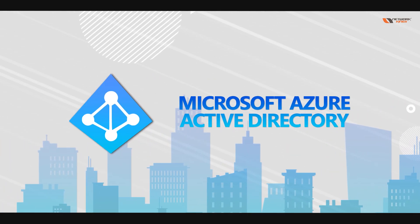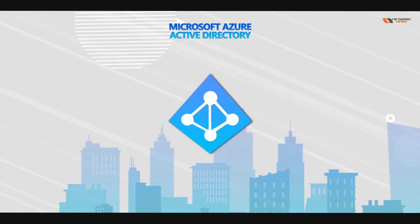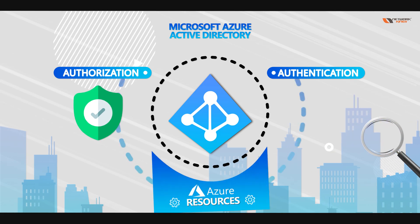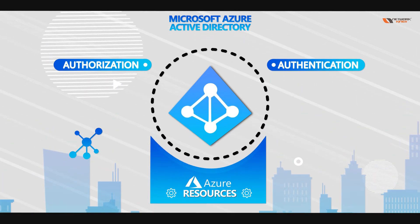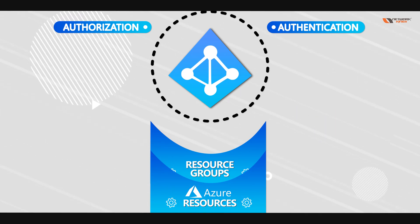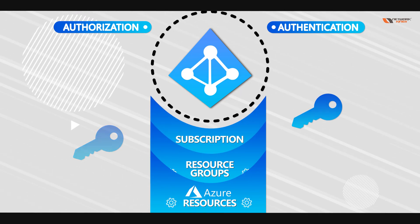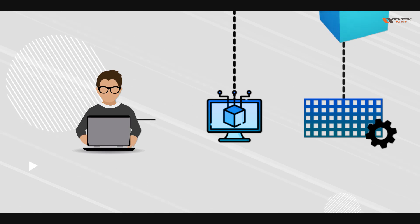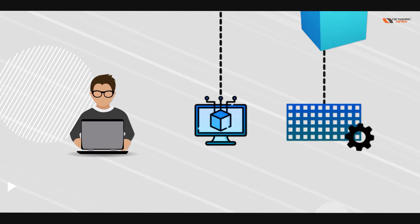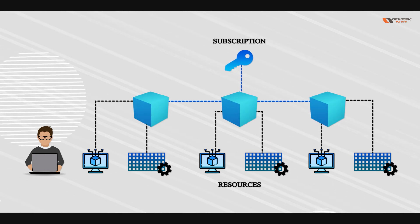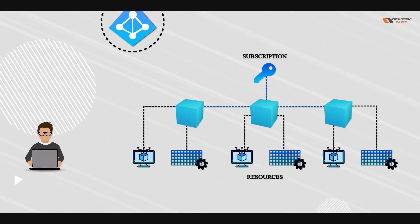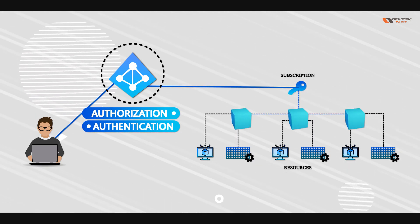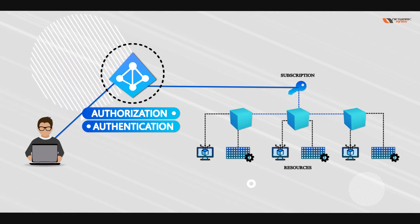Azure Active Directory is an IAM service used for authentication and authorization to Azure resources, which are under a resource group. Resource groups are generally under a subscription. A user who wants access to a resource will go through Azure Active Directory, to the subscription, and then to the resource. Azure Active Directory handles both the authentication and authorization parts before giving the required access to the resource.